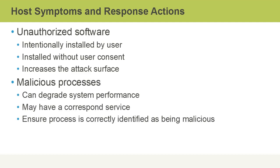Malicious processes run in the background and are usually the result of some kind of malware infection, which can degrade system performance. They may also have a corresponding service — or in the case of Linux, a daemon — that runs in the background. We should monitor our background services in Windows or daemons in Linux periodically. From the command line, you can get a list of services and pipe it to a file, then compare the current list of running services against that baseline. We should ensure all running processes are legitimate, while being careful not to kill processes that are actually required by the operating system.